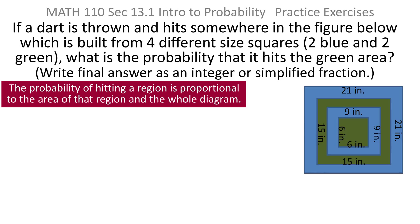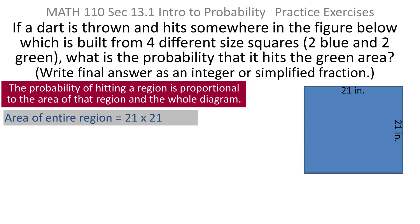The idea is exactly the same as before, which is the probability of hitting a region is proportional to the area of that region in the whole diagram. The mechanics of finding that is going to be a little different. We'll do just as we did in the last problem we worked with the dart board and calculate the area of the entire region. So I can just get rid of all the distractions. The entire region consists of simply a 21 by 21 square, and 21 times 21 is 441. So the area of the entire region is 441.